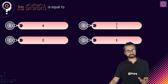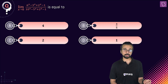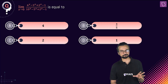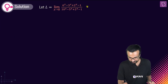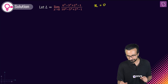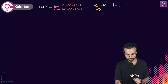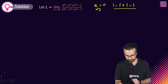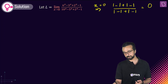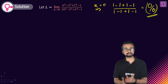Look at this question: limit x tends to zero of (6ˣ - 3ˣ + 2ˣ - 1) / (10ˣ - 5ˣ + 2ˣ - 1). There's some pattern here. Substituting x = 0: numerator gives 1 - 1 + 1 - 1 = 0, denominator gives 1 - 1 + 1 - 1 = 0. Zero by zero indeterminate form — the actual answer is hidden.